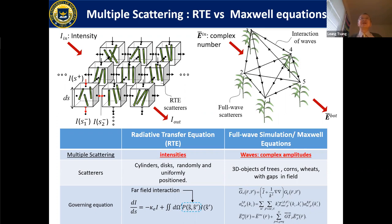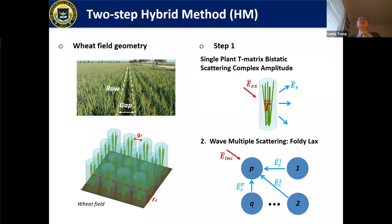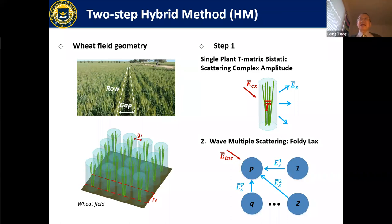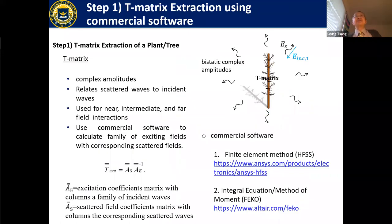Comparing the old RTE approach with our present simulation: RTE deals with intensities using cylinders and discs randomly positioned; our full wave simulation uses realistic 3D tree and corn objects with gaps in the field. RTE uses a phase matrix, but complex field simulations use T-matrices and Green's functions. We use commercial software like HFSS and FEKO to calculate the T-matrix by applying a family of excitation fields and computing the scattered field matrix.